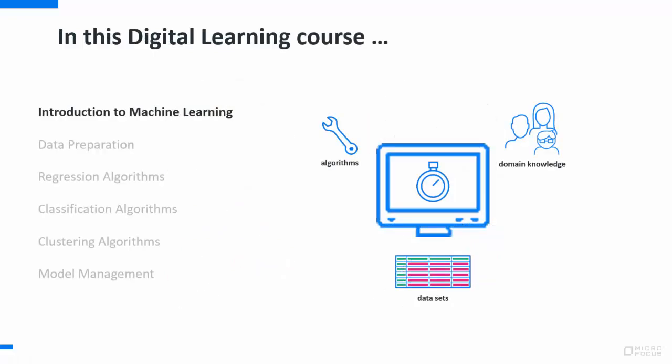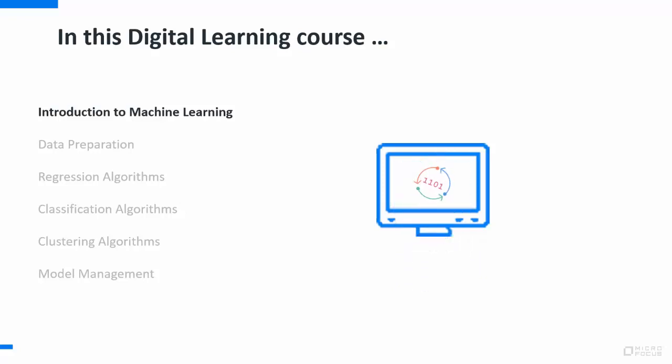This digital learning course is broken down into six independent modules. In the first module, we set the stage. We introduce the overall process of model development, where we use Vertica's machine learning algorithms, your domain knowledge, and your datasets to create predictive models.